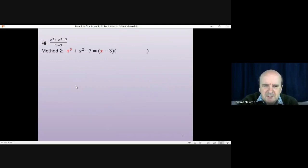So you'd write it down as x cubed plus x squared minus 7 is equal to x minus 3 times by the quotient times by something. You'll have to work that out, plus a remainder, which you're also going to have to work out.